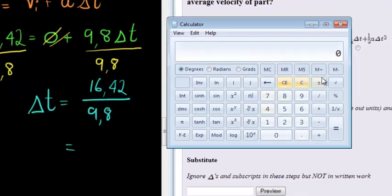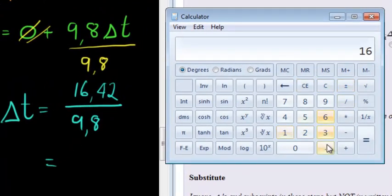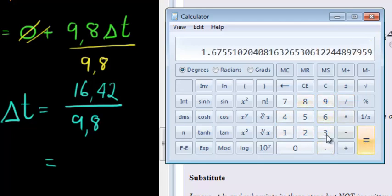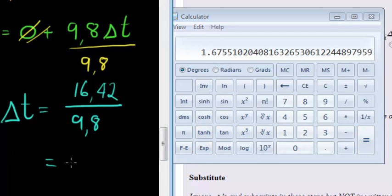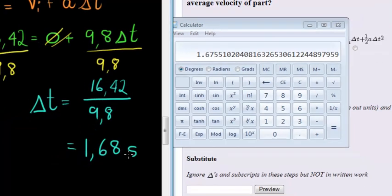16.42 divided by 9.8, I get 1.675, which rounds to 1.68 seconds.